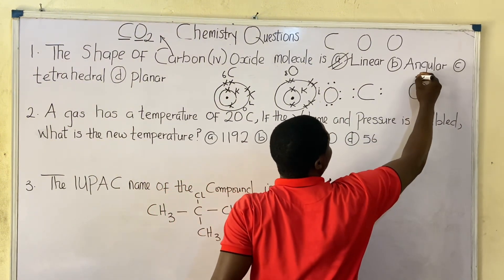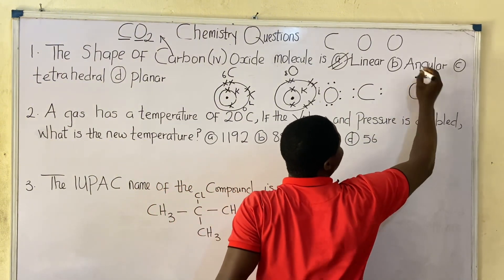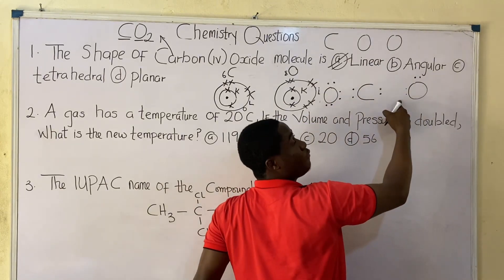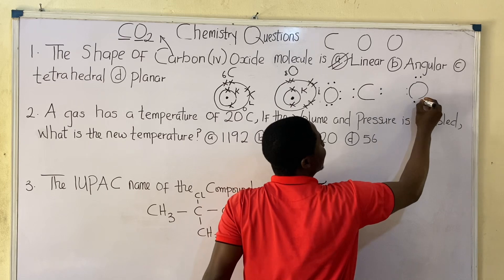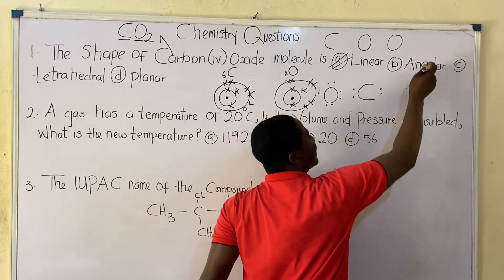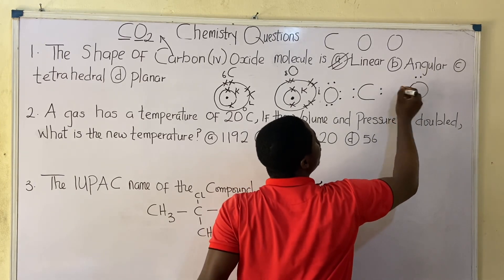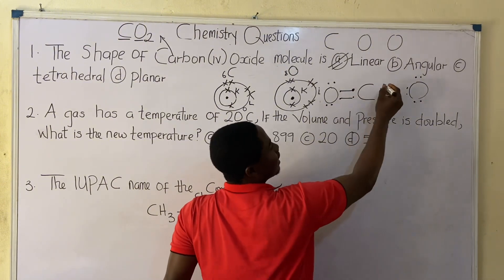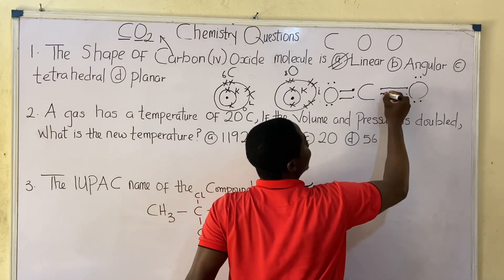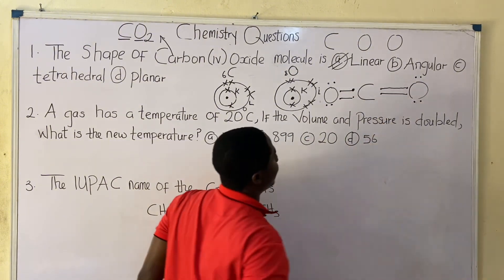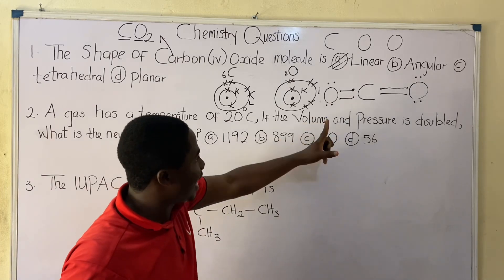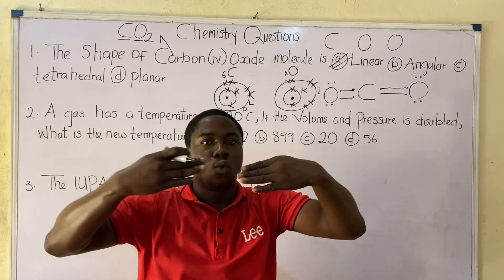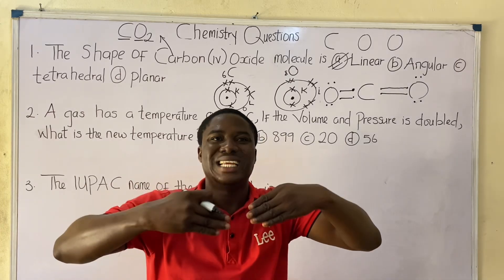For the second oxygen atom, we do the same: 2 electrons here, another 2 making 4, and a final 2 making 8 electrons. Then we connect the atoms together. When connected, you can see that the compound is drawn in a straight line — so we call it linear.